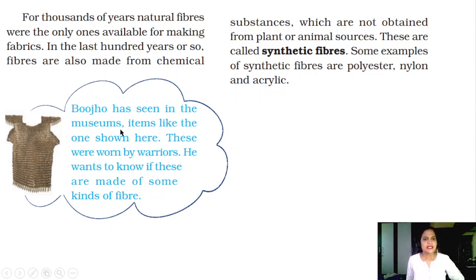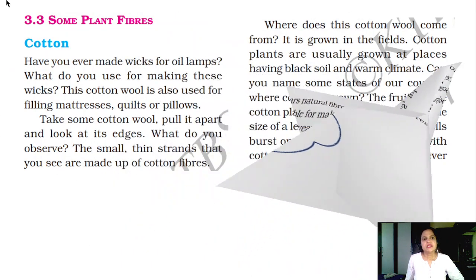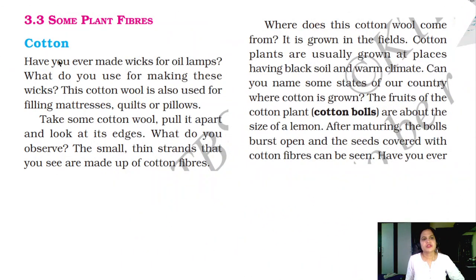Bhujo has seen items like armour in museums that were owned by warriors. He wants to know if these are made of some kind of fiber. No — these are made up of metals.